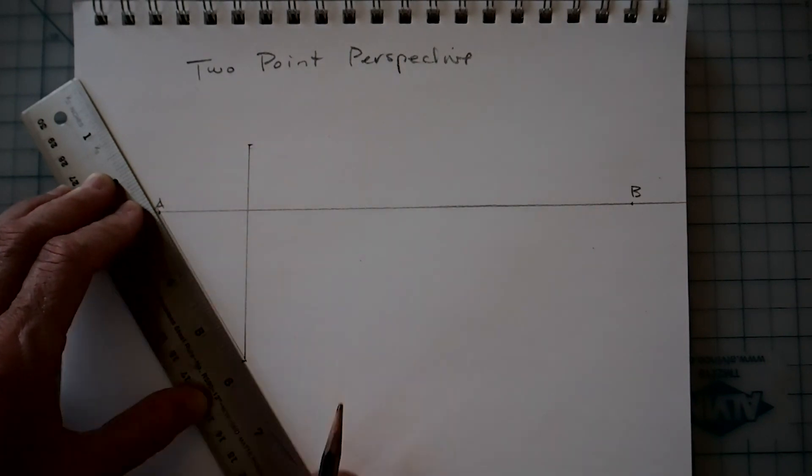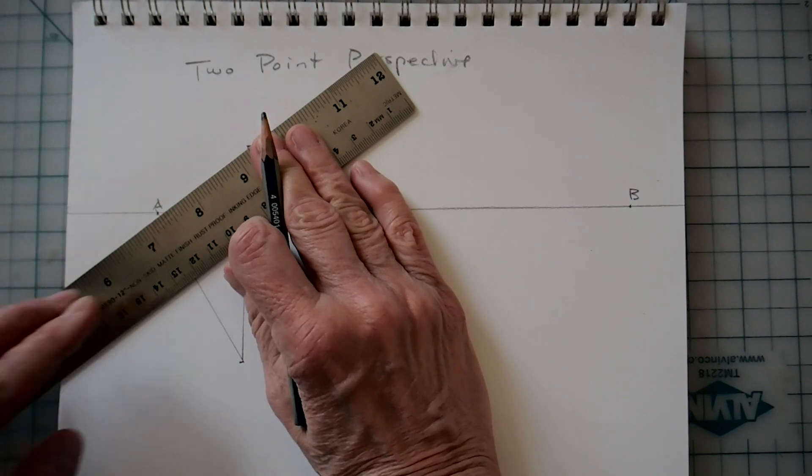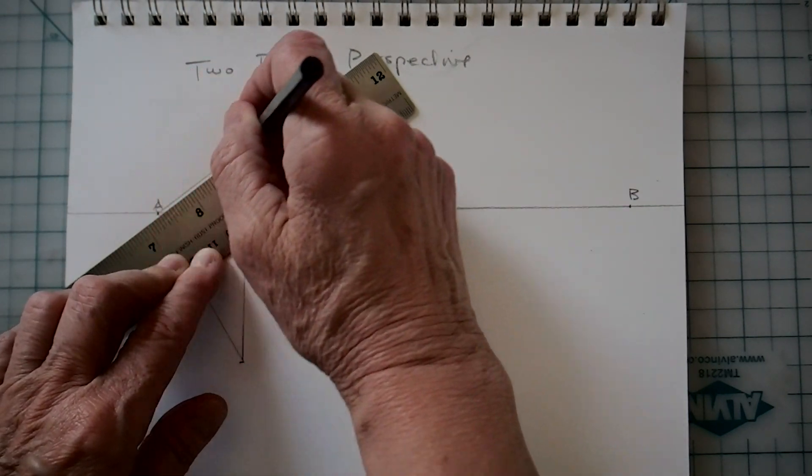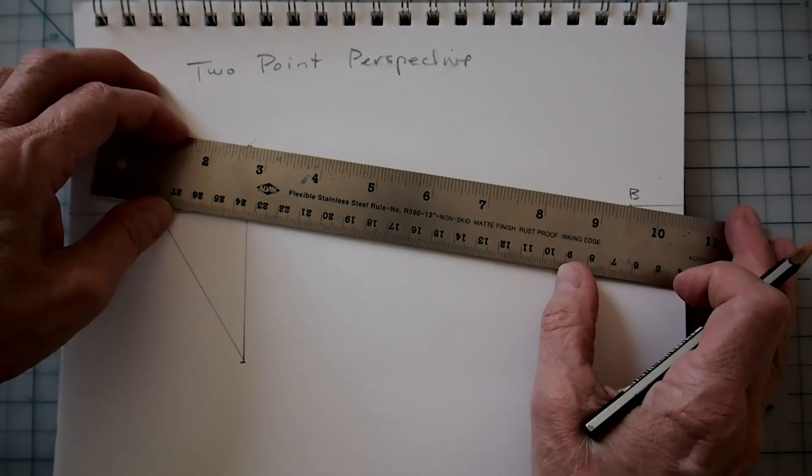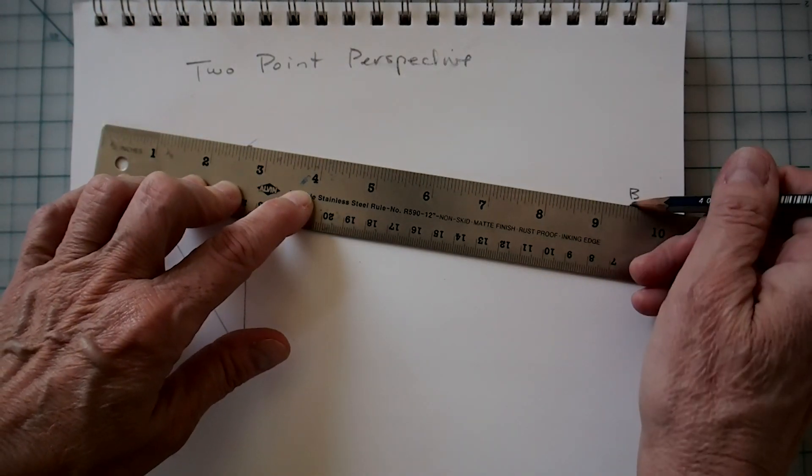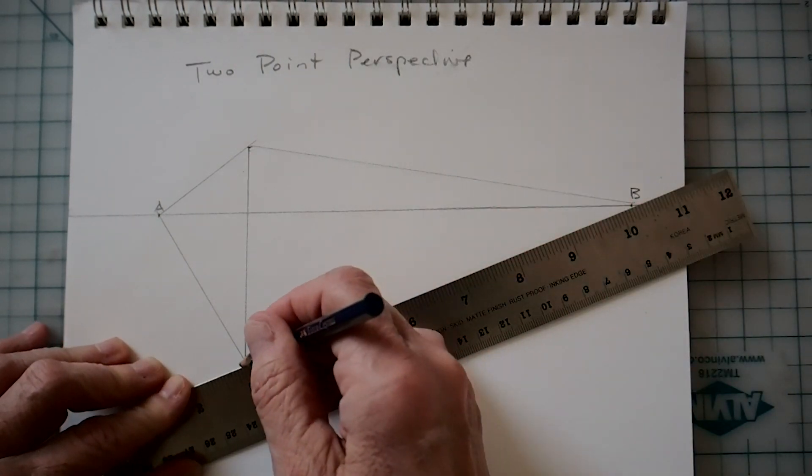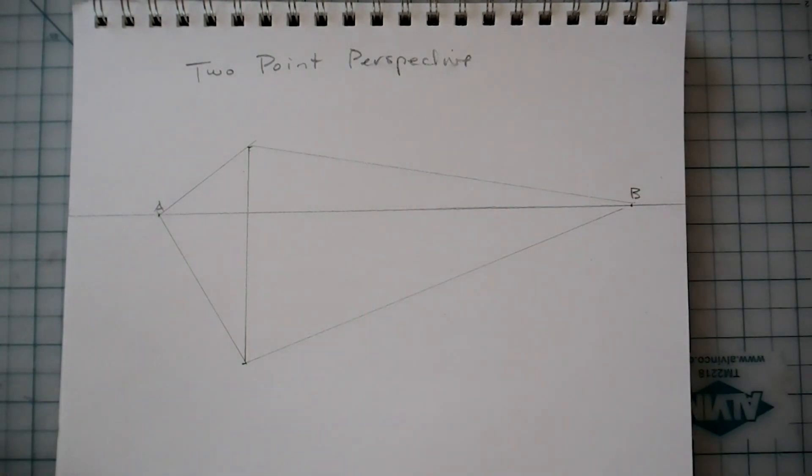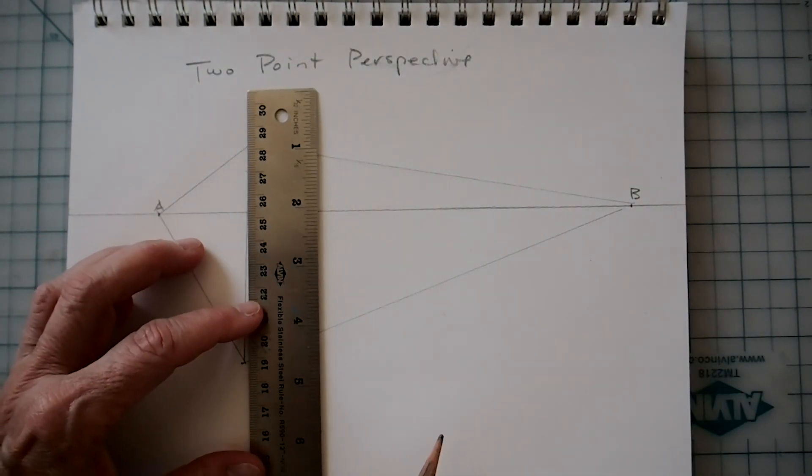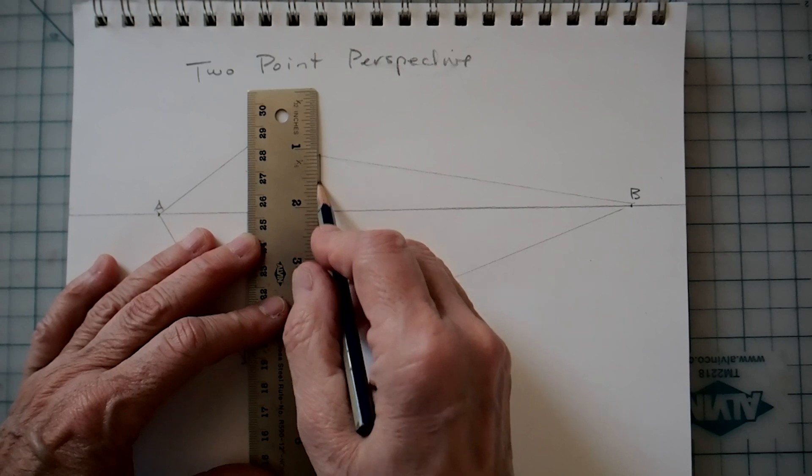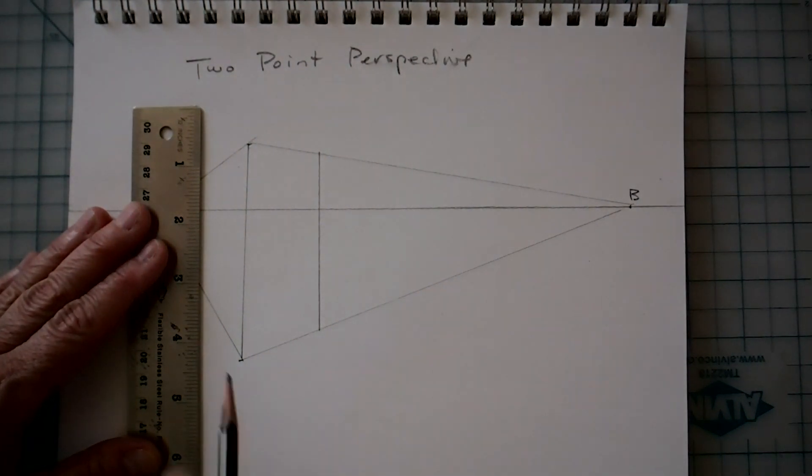You're going to join from point A to the two ends of that line and then from point B to the other ends of the line. Now you can see it's starting to take some shape. Then you're going to create the rest of the box with two vertical lines arbitrarily anywhere you want them as long as there's one on either side of that first line that you drew.